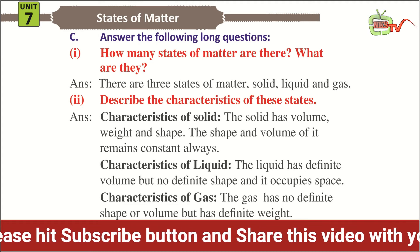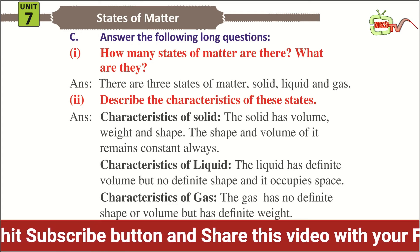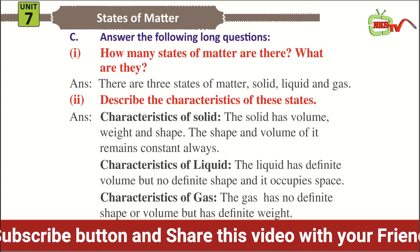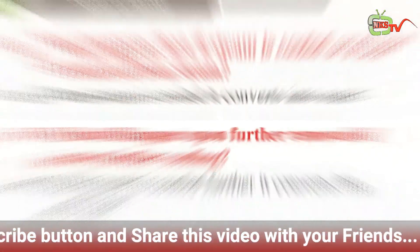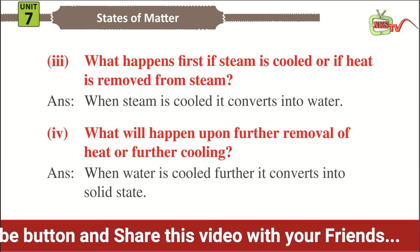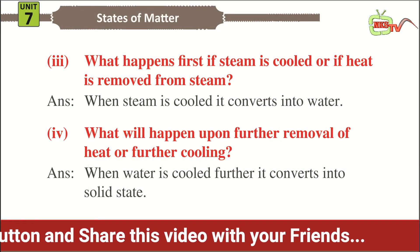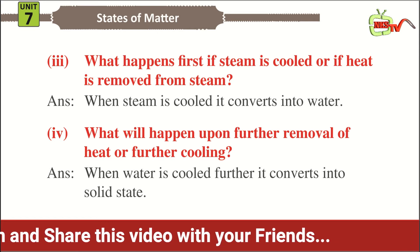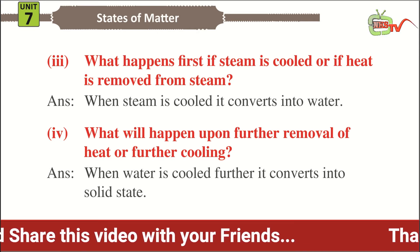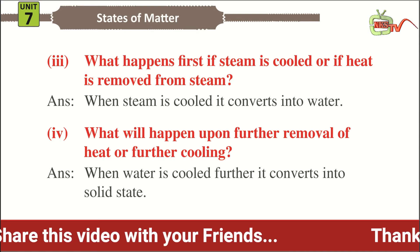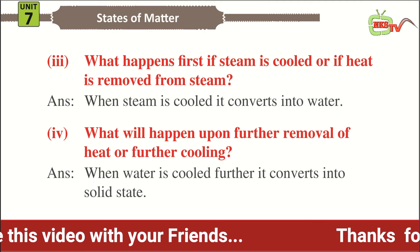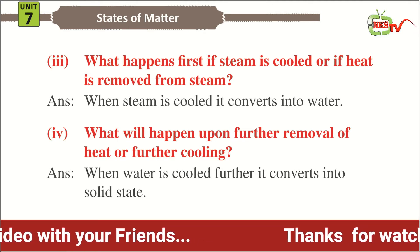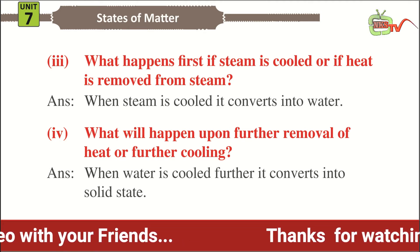Characteristics of gas — the gas has no definite shape or volume but has definite weight. Question number three: what happens first if steam is cooled, or if heat is removed from steam? Answer: when steam is cooled, it converts into water.